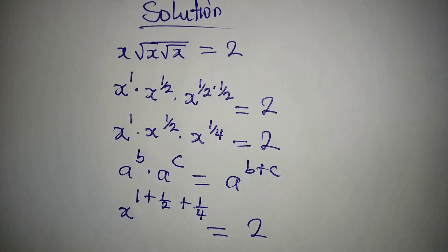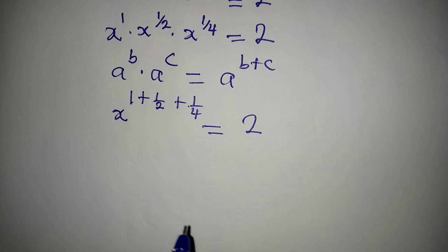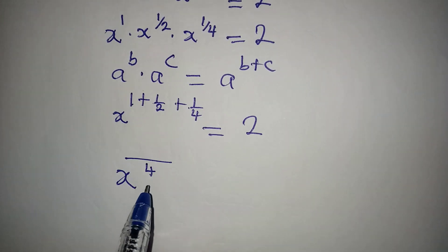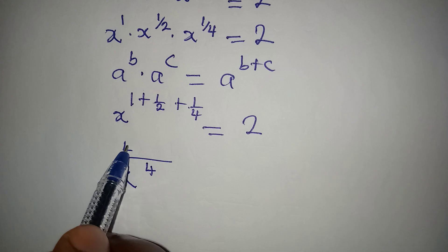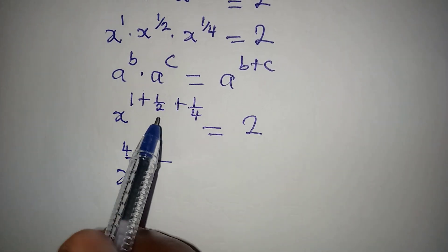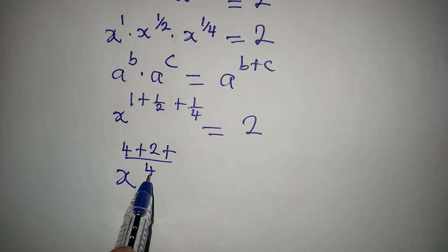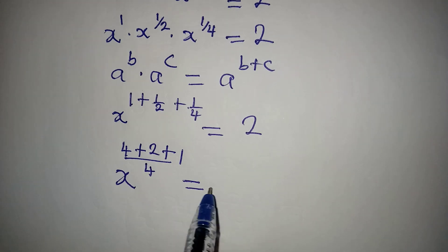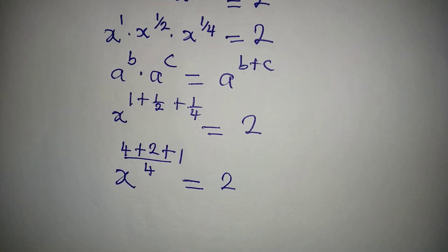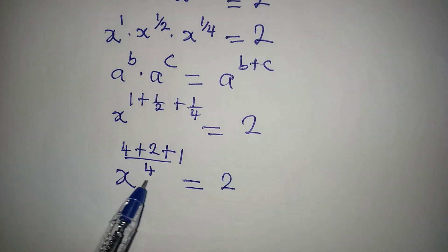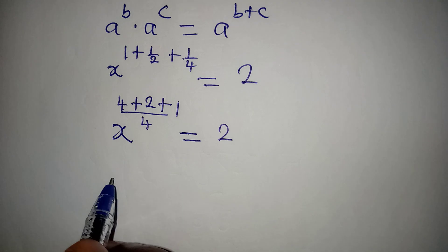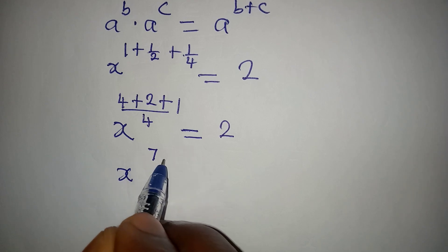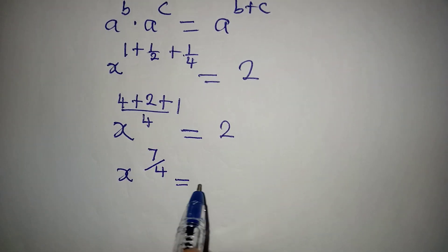This is equal to 2. The LCM of the powers is 4. So: 4 divided by 1 times 1 is 4, plus 4 divided by 2 times 1 is 2, plus 4 divided by 4 times 1 is 1. That gives 7/4, and this is the power of x. So x to the power of 7/4 is equal to 2.